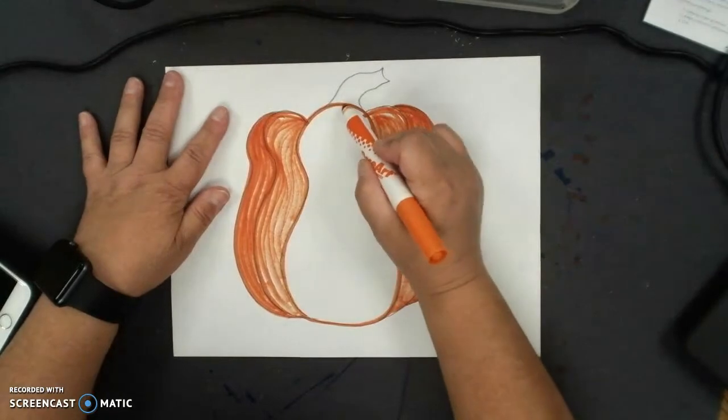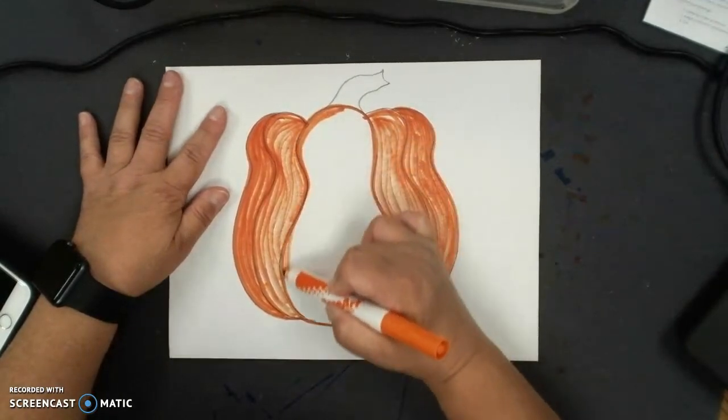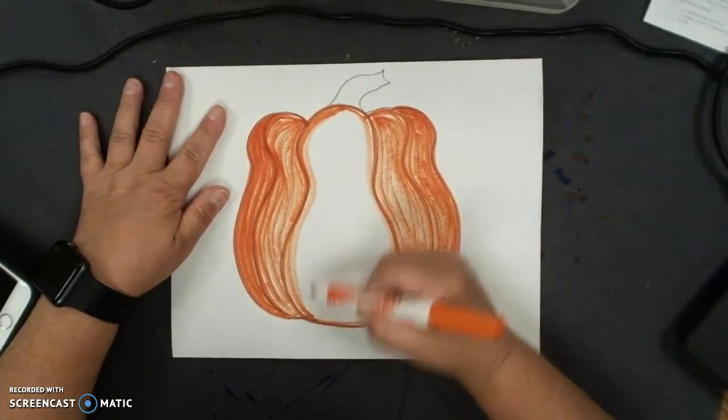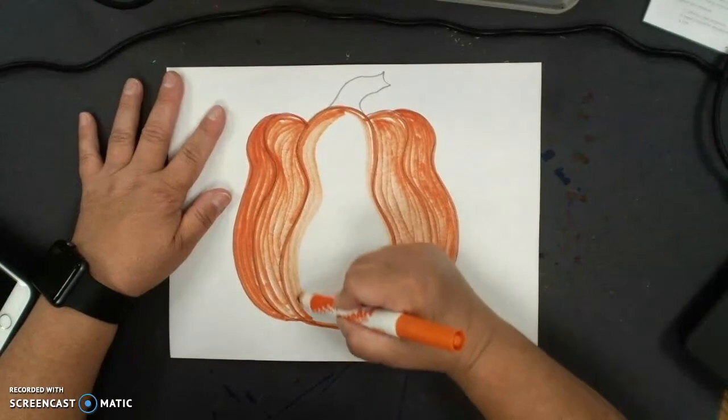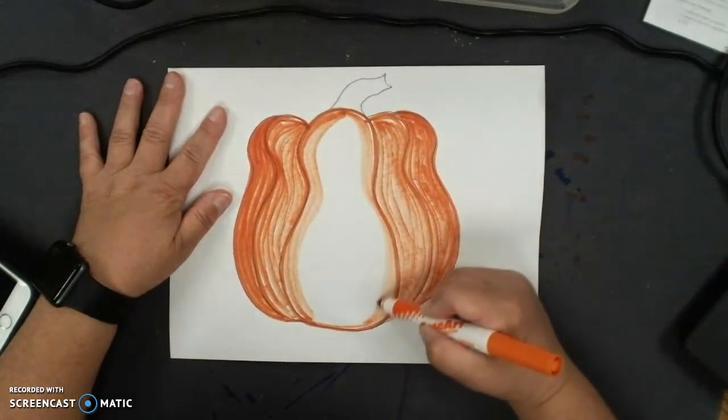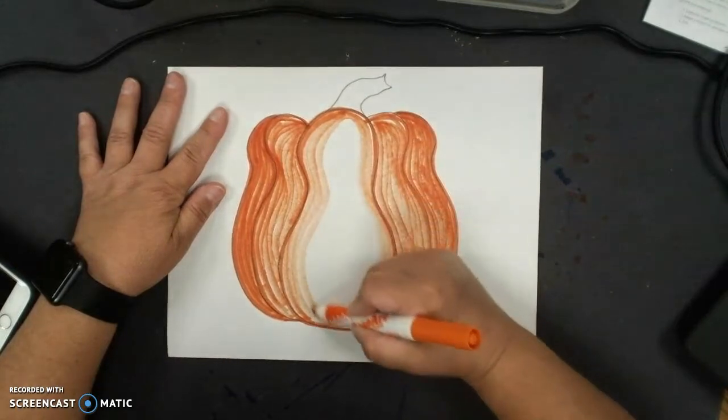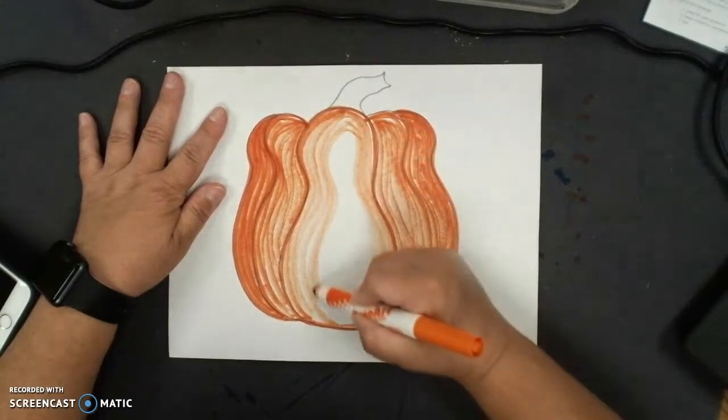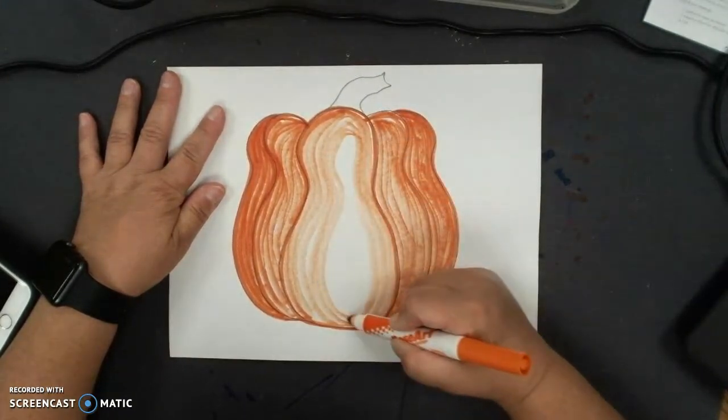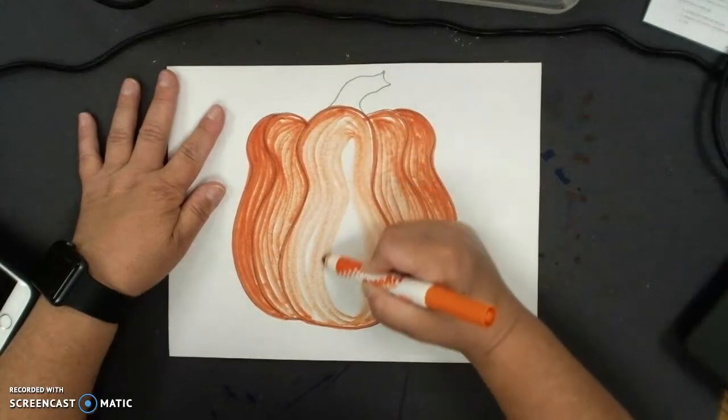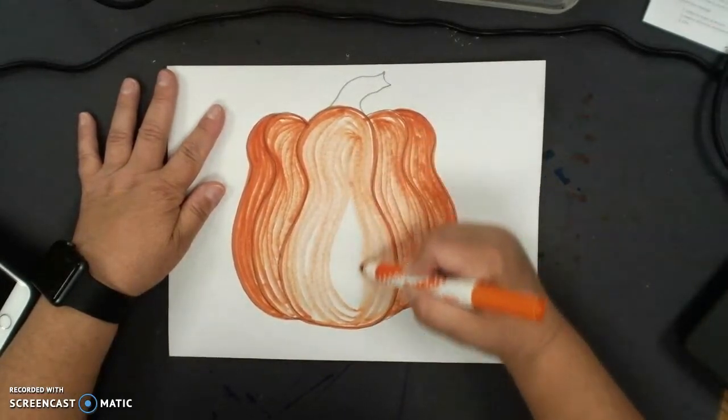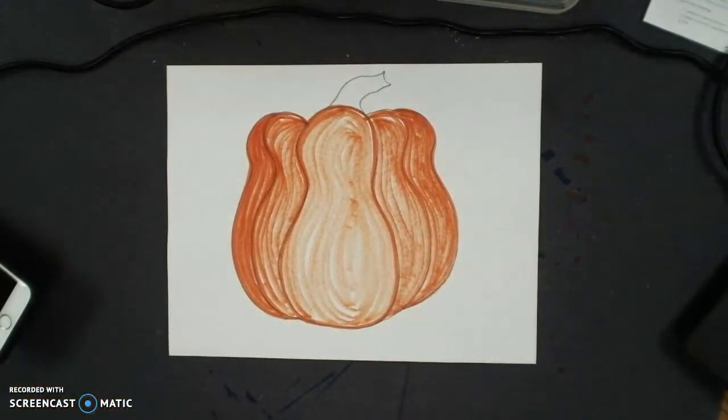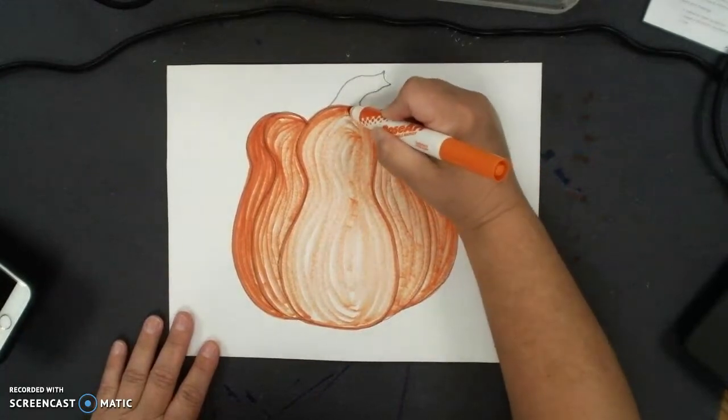It's kind of getting lighter. It's a good thing I started on the outside because I'm getting lighter as I go in, because this would be the shiny part of the pumpkin, this would be the closest part to us anyway. Yes, I know my marker's fading but that's okay. I can go back to it with another one if I have another marker later, but I can always go back over it with crayon if I need to. I kind of like the way it's looking though, I kind of like that faded look.